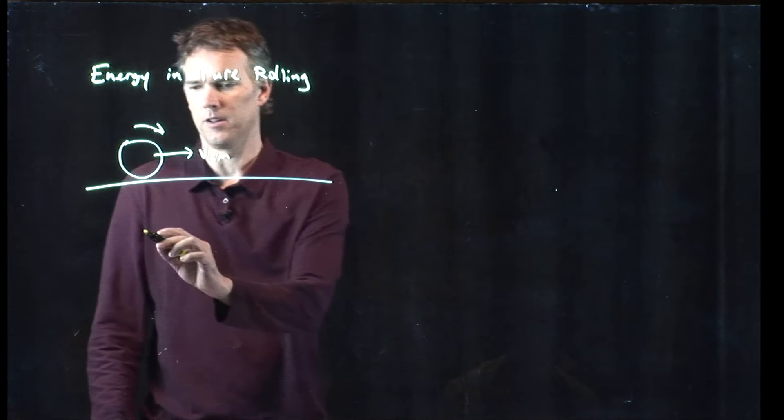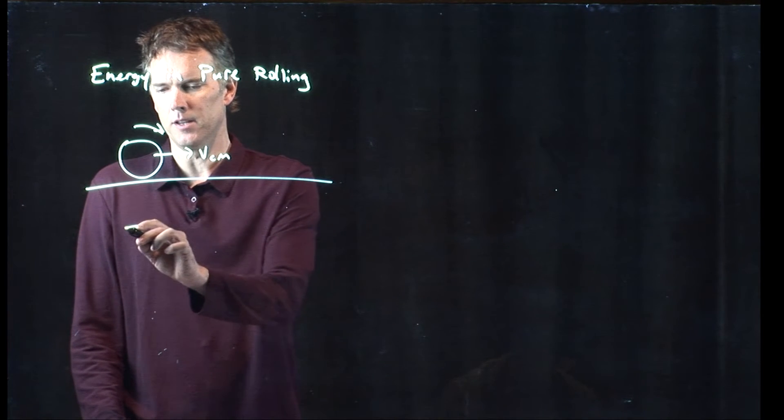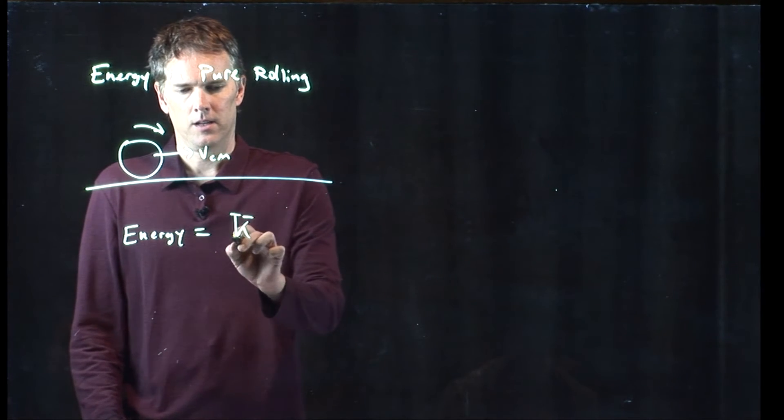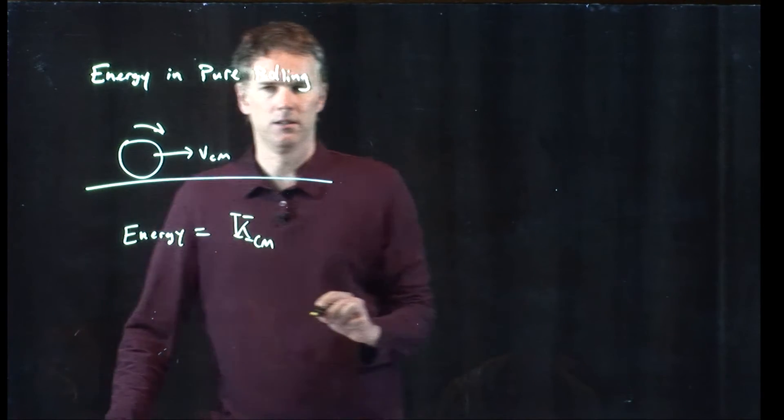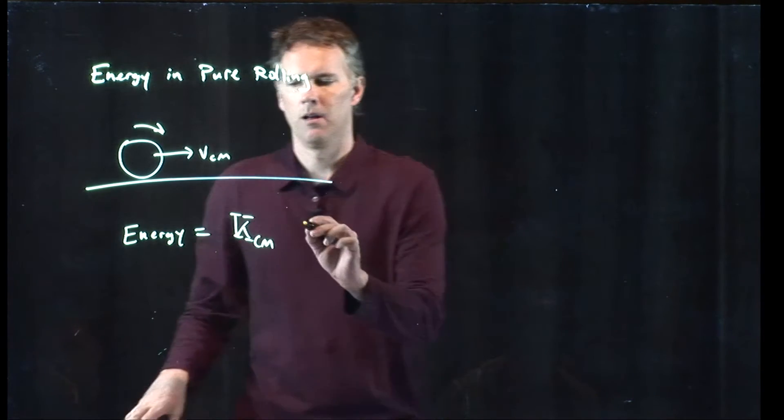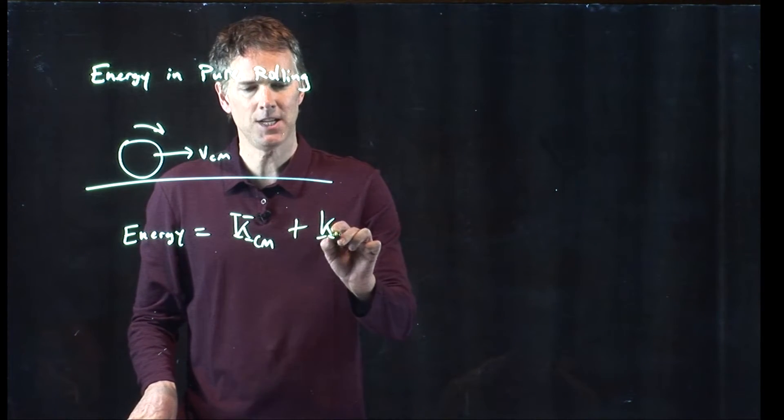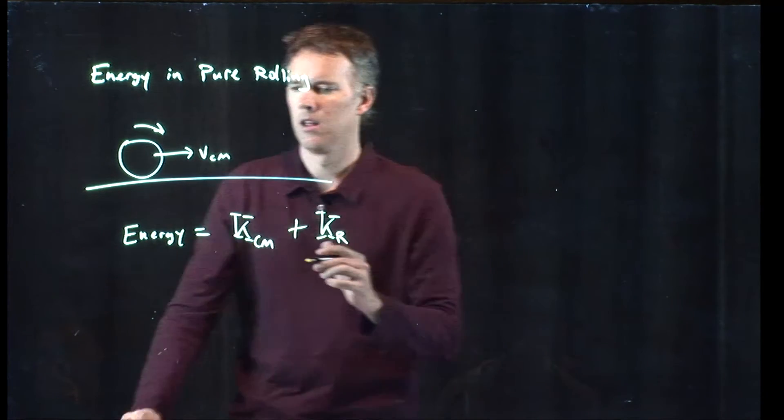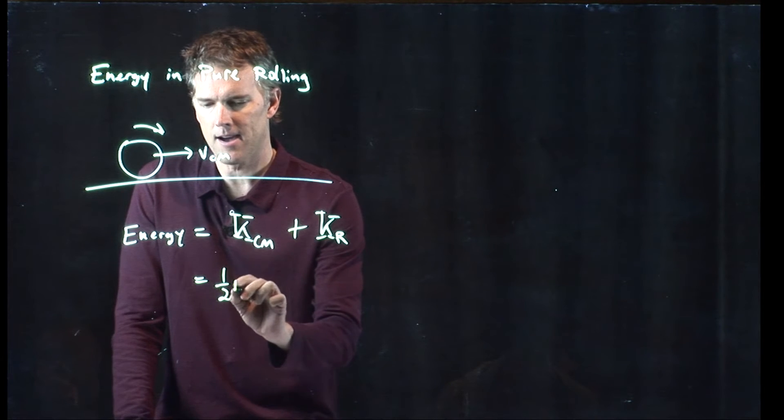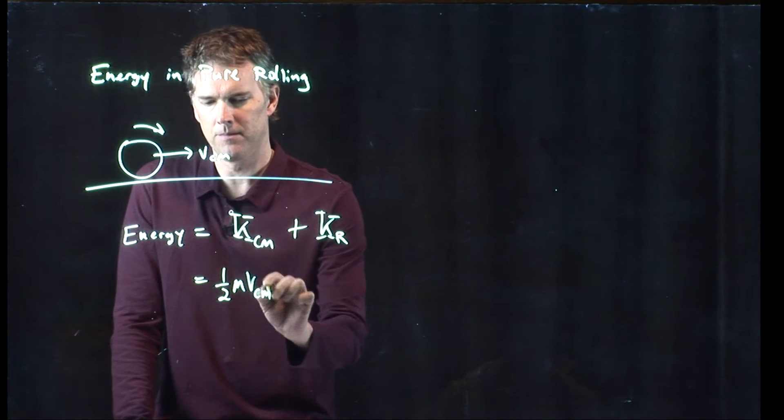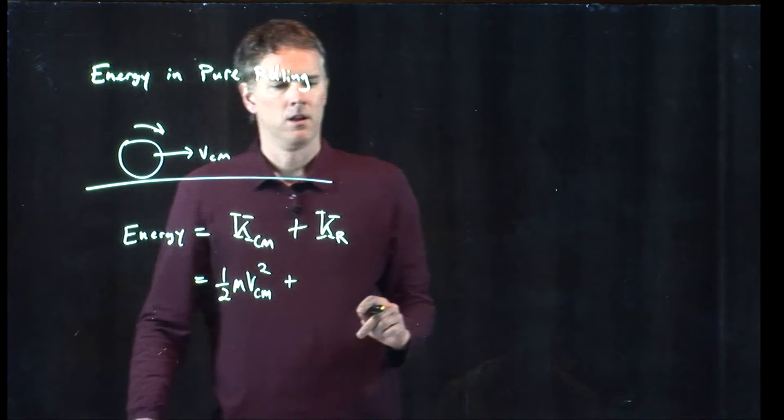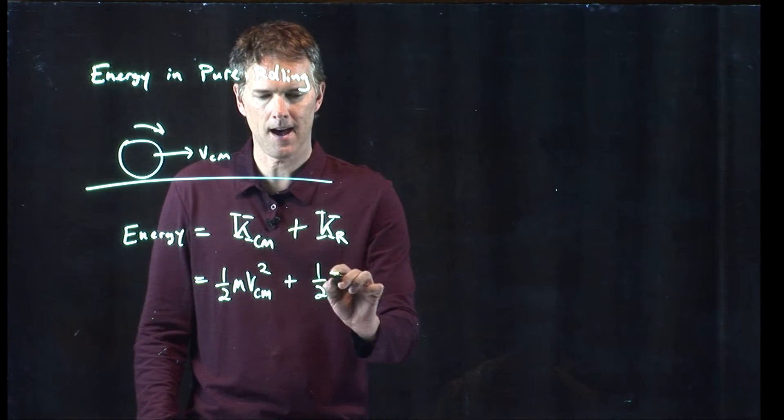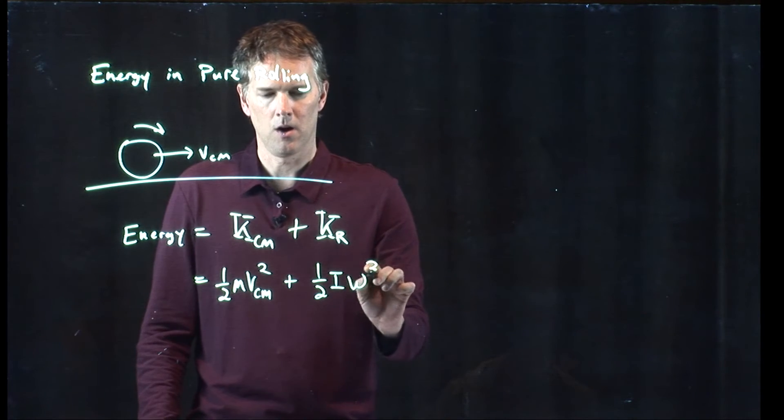What is the energy in this thing? Well, the energy is going to consist of two things. It's the kinetic energy of that center of mass moving, plus the rotational energy of the object rotating on its axis. We know what this is. This is one-half m v squared. What about this guy? That guy is one-half I omega squared.